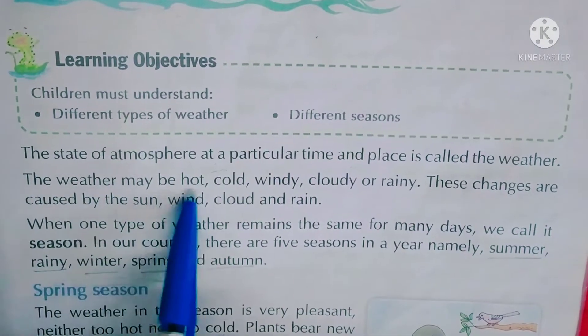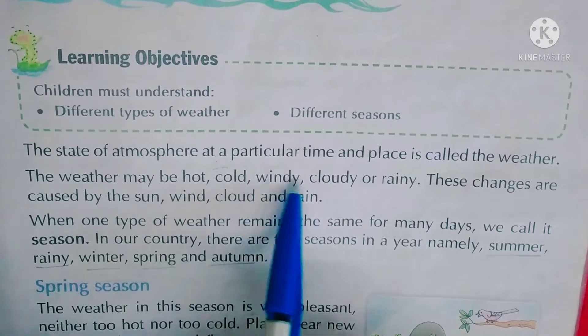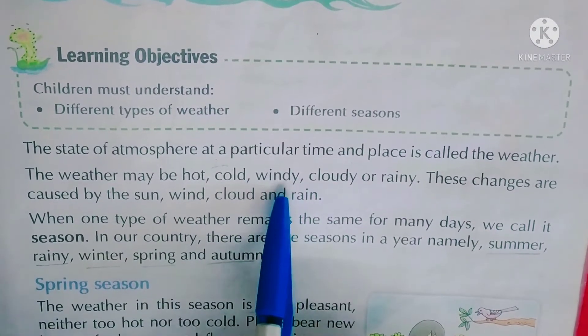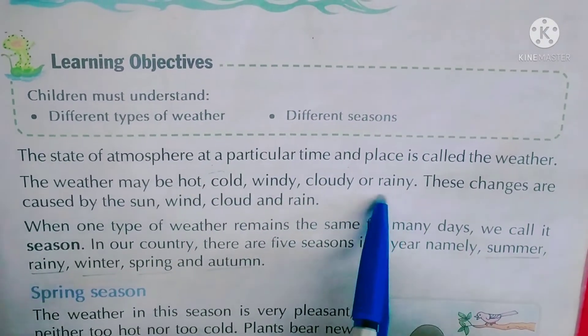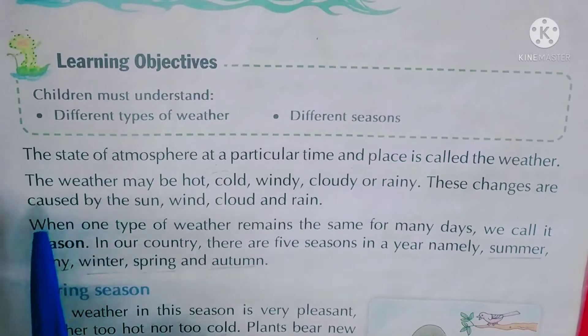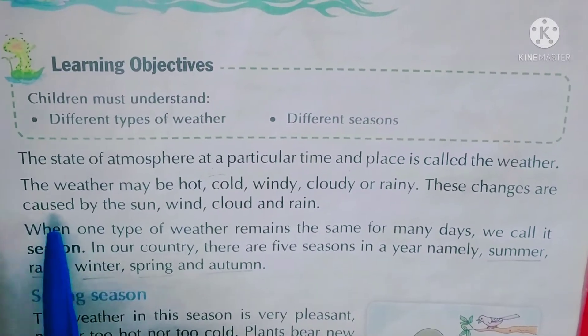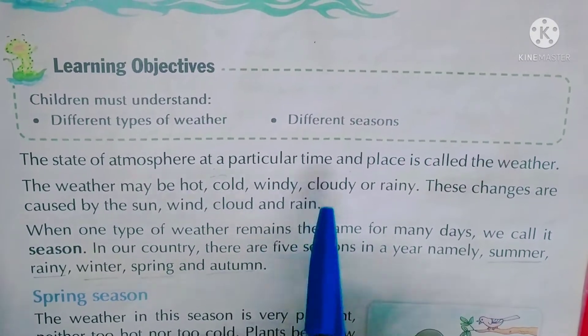The weather may be hot - मौसम गर्म हो सकता है, cold - ठंडा, windy - बहुत हवा चल रही हो, cloudy - बादल लगे हों, और rainy - बारिश हो रही हो। These changes are caused by the sun, wind, cloud and rain. यह किसके कारण बदलते हैं - सूरज, हवाएं, बादल और बारिश।